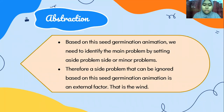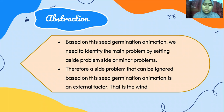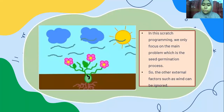Next is abstraction. Based on the seed germination animation, we need to identify the main problem by setting aside side or minor problems. A side problem that can be ignored in this animation is an external factor, which is wind. In this Scratch programming, we only focus on the main problem — the seed germination process — rather than external factors such as wind.